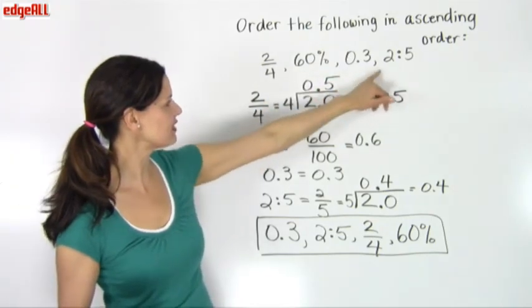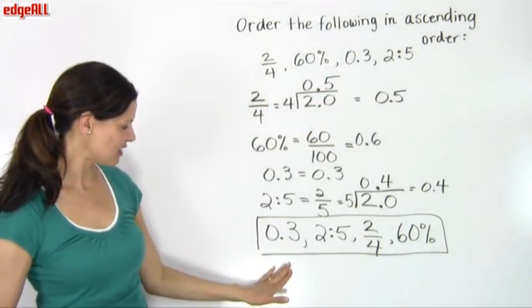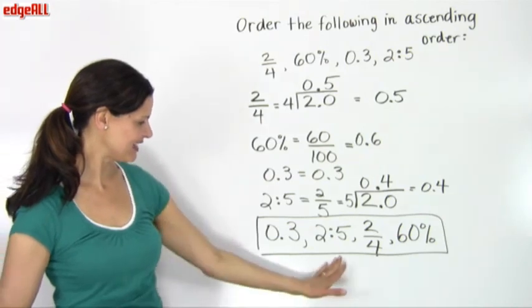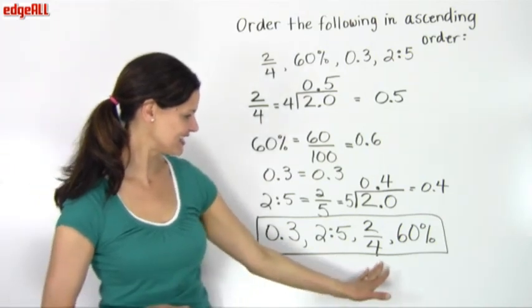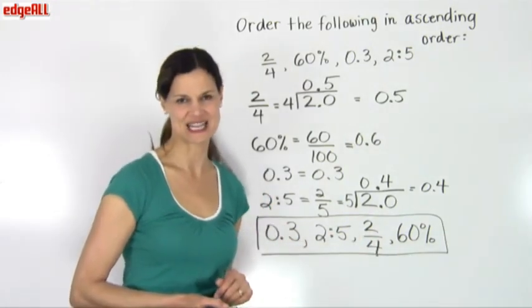So that completes my problem of placing the following in ascending order: 2 fourths, 60%, 0.3 and 2 to 5. The order of that, the smallest one is 0.3, the ratio 2 to 5, the next larger is 2 fourths, and the largest of all is the 60%.